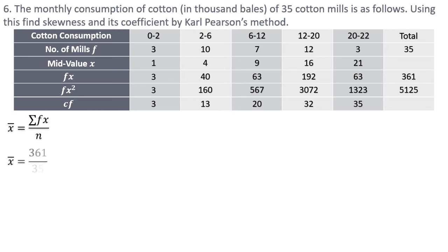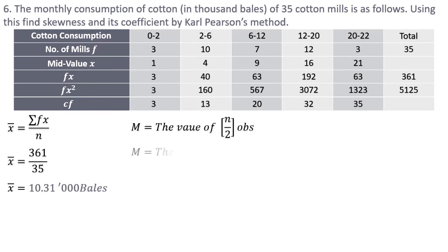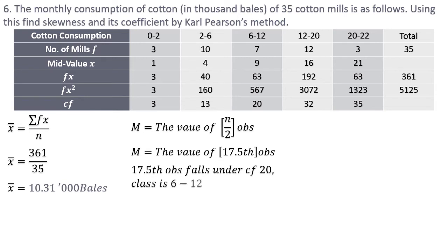The mean is Σfx/n = 361/35 = 10.31 thousand bales. For median, since it's continuous data, I use the n/2 observation: 35/2 = 17.5th observation. From the cf column, 17.5 falls under cf 20, which corresponds to the class 6 to 12. This class is already exclusive. The lower limit is 6, frequency is 7, cf before this class is 13, and class length is 6.